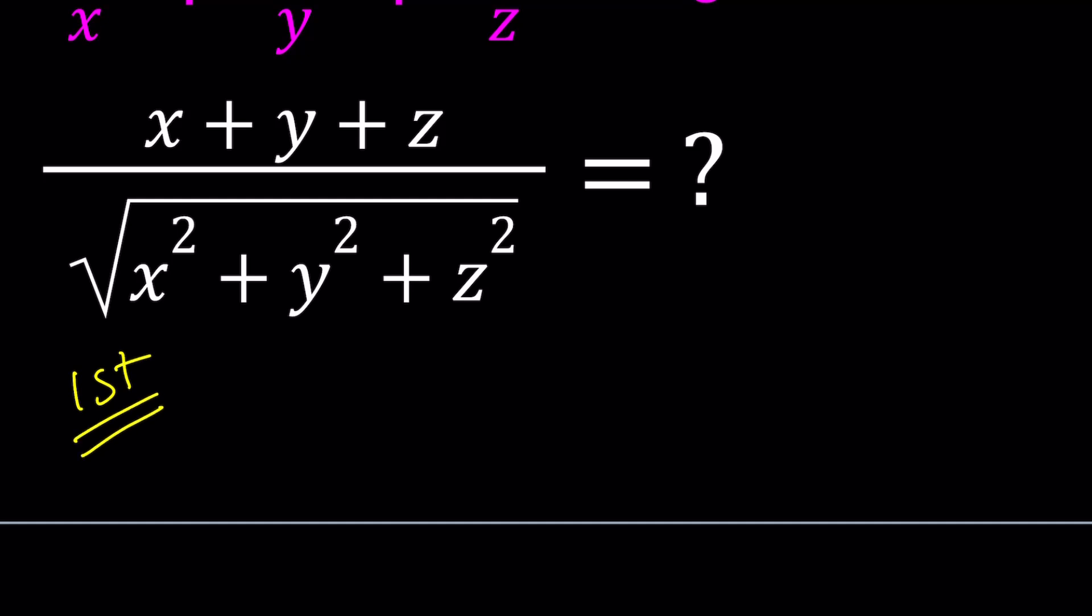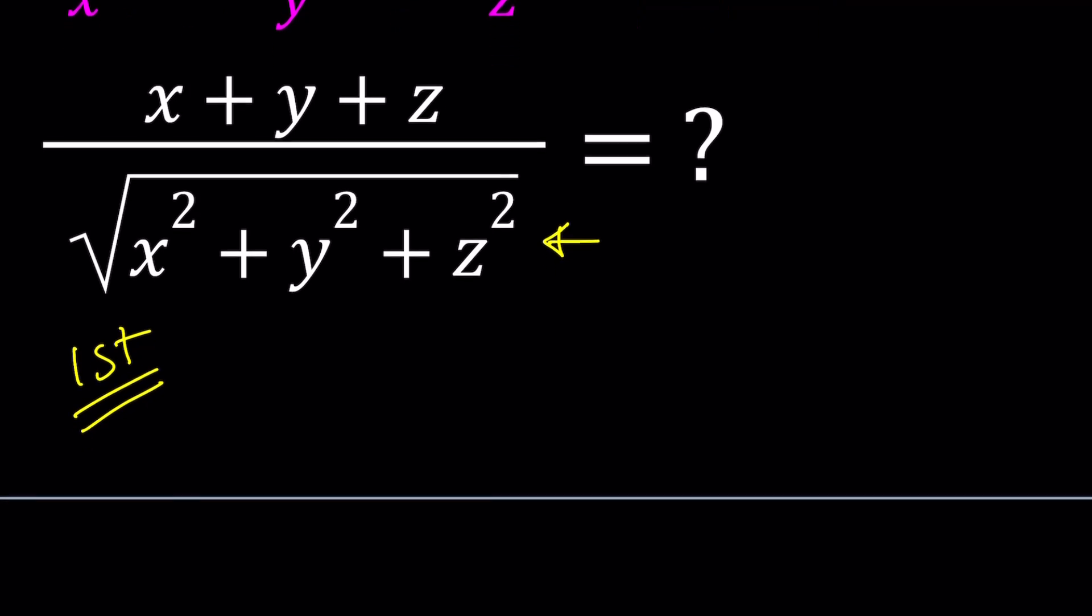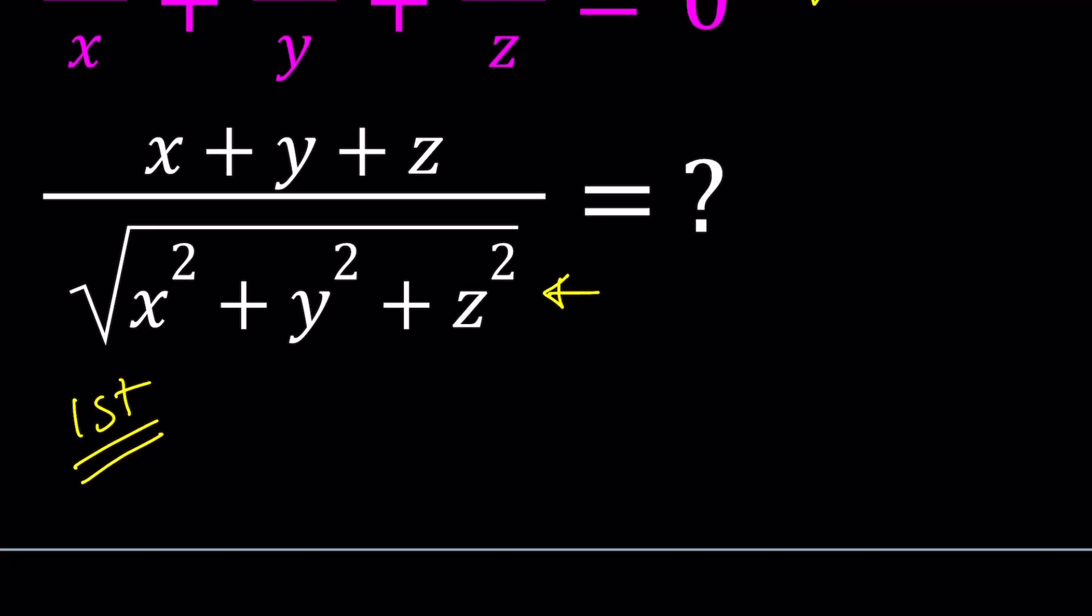First method. I'm going to work with the first expression first. Let's make a common denominator. Notice that x, y, z all have to be different from 0. That is also going to give us a non-zero denominator here, because x squared plus y squared plus z squared can only be 0 if x, y, z are all 0s.